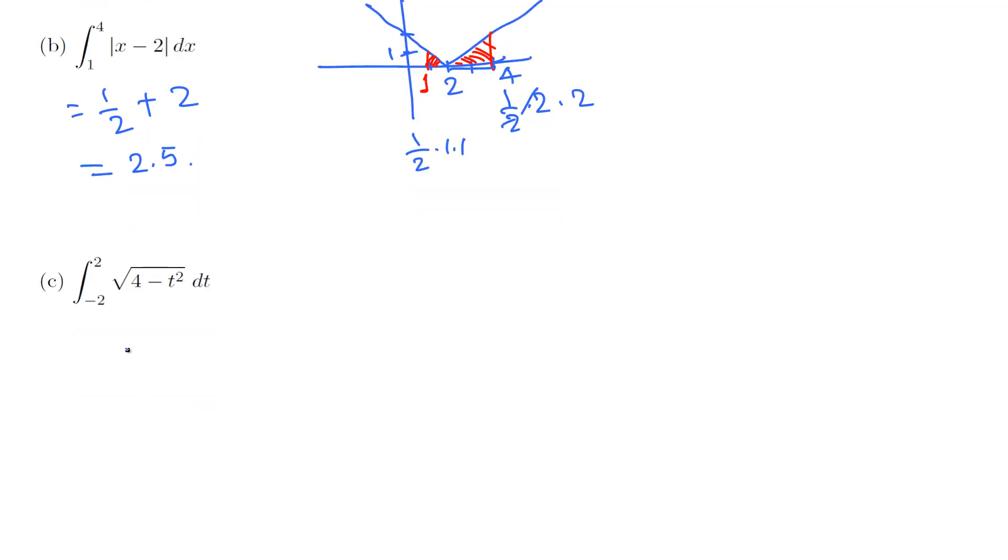In part c, we have this function. You can graph y equals square root of 4 minus x squared. If you square both sides, you get y squared equals 4 minus x squared. Bringing this over, we get x squared plus y squared equals 4.